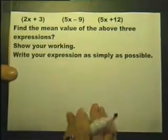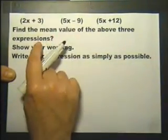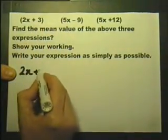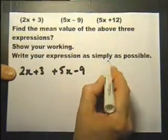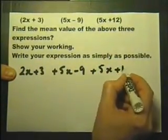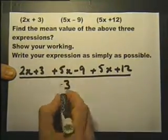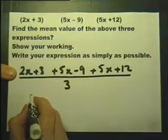Still on the same theme, find the mean value of the above three expressions. So I'll add these together. And after I've added them together, I'm going to divide by 3. So I've got 2x, 5x and 5x, which is 12x.